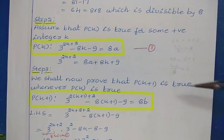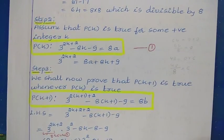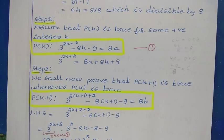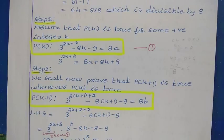Now the next step — the third step — we have to prove that the given statement is true for P of k plus 1. To prove that, I am first writing the P of k plus 1 statement. To write it, wherever you have k, replace that with the value k plus 1.